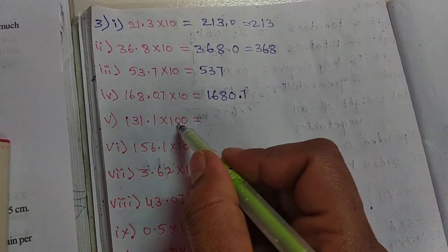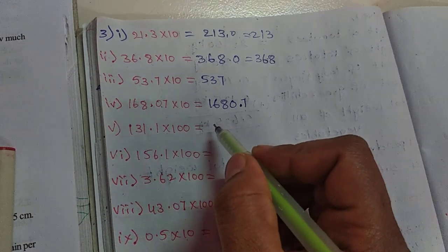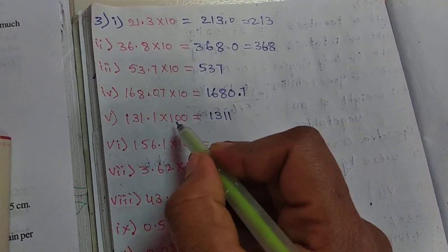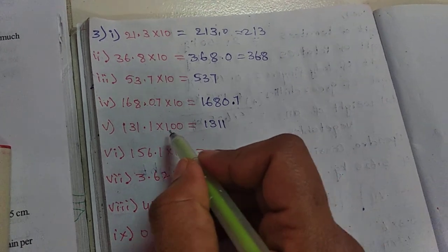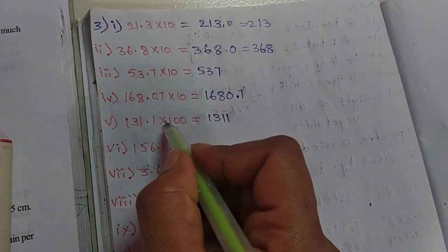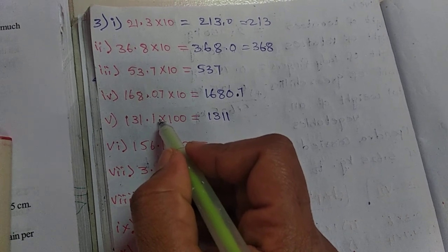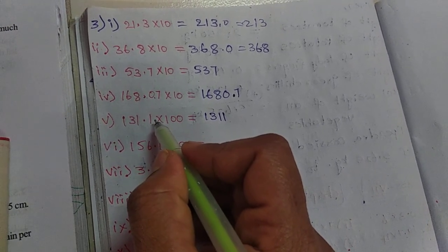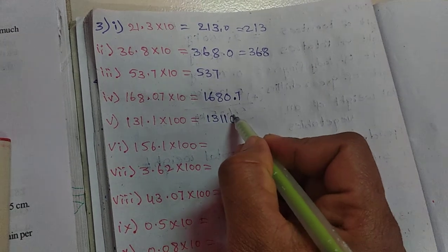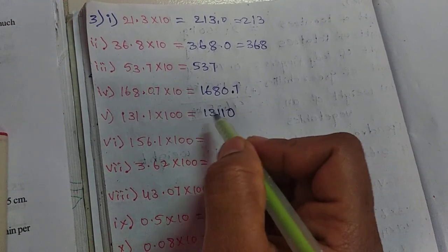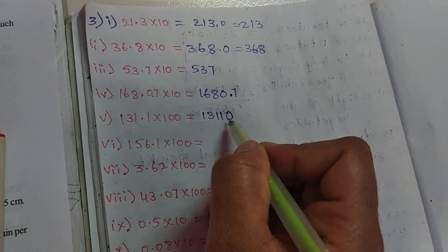Next, 131.1 into 100. When we multiply by 100, then two digits move to the right side. First write the number as it is. Here we multiply by 100, so two digits move. One digit is here, but another digit is not there. When there's no digit, what to do? Add zero.